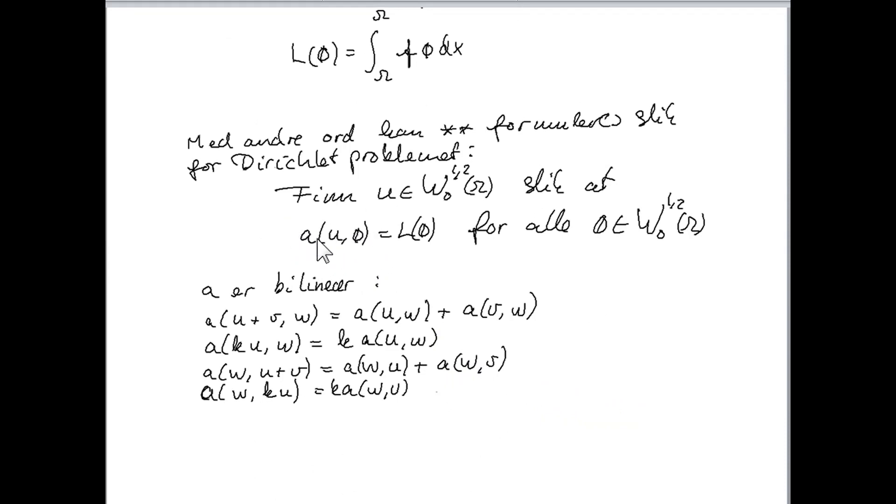This function, which is a real function of two variables, two elements u and phi, this function is called bilinear. And the reason why it's bilinear is the following, that it satisfies this identity. It's linear, we have u plus v in the first argument here, and w in the second. Then we can split this into a sum of two functions in the natural way.